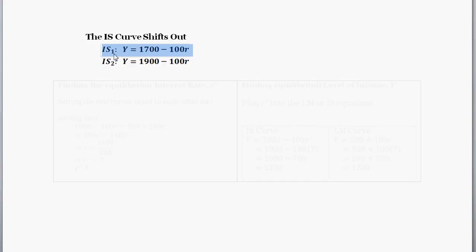Where before our IS curve, IS sub 1, I'm labeling here, before IS curve was Y is equal to 1700 minus 100r. And like I said, we calculated that in a previous video. Now the IS curve is Y is equal to, so income or output is equal to 1900 minus 100r. So that's our new IS curve. Things are clearly bigger. So we went from 1700 to 1900. So this IS curve is shifted outward, or to the right.